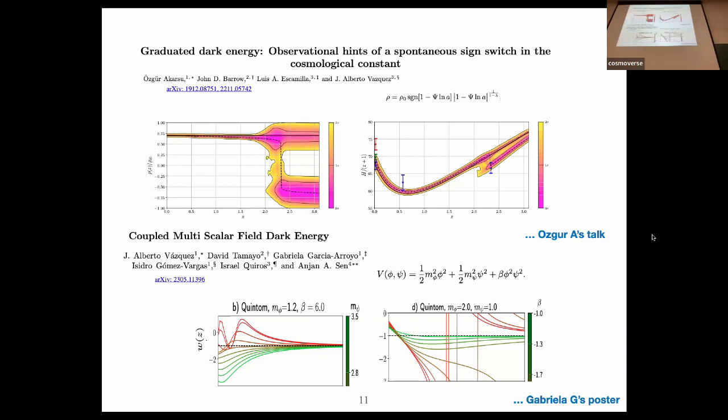If scalar fields are going to be allowed in the future, I think it's time to take into account multiple scalar fields that are able to cross the phantom divide line and produce this wiggly behavior. Depending on the coupling parameter being positive or negative, it's also going to produce either a pole in the equation of state or the wiggly behavior. We could also reconstruct the functional form of the potential.